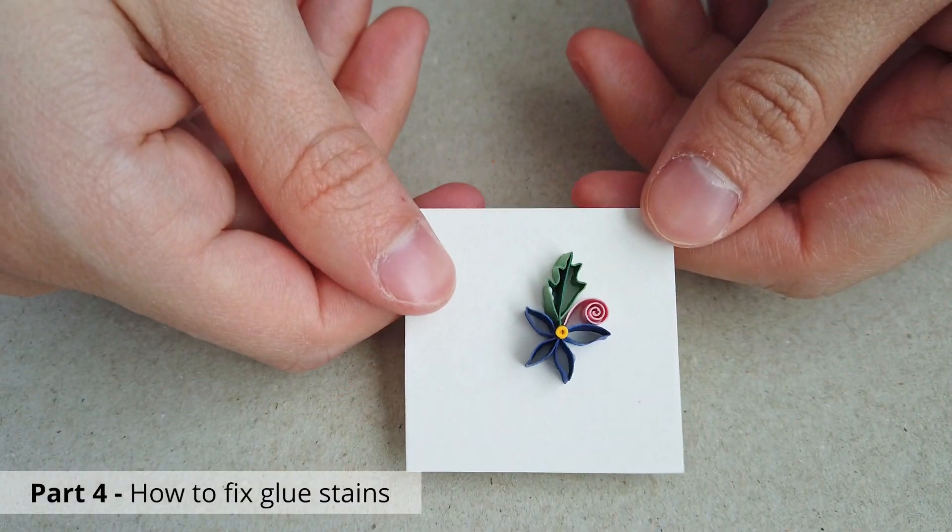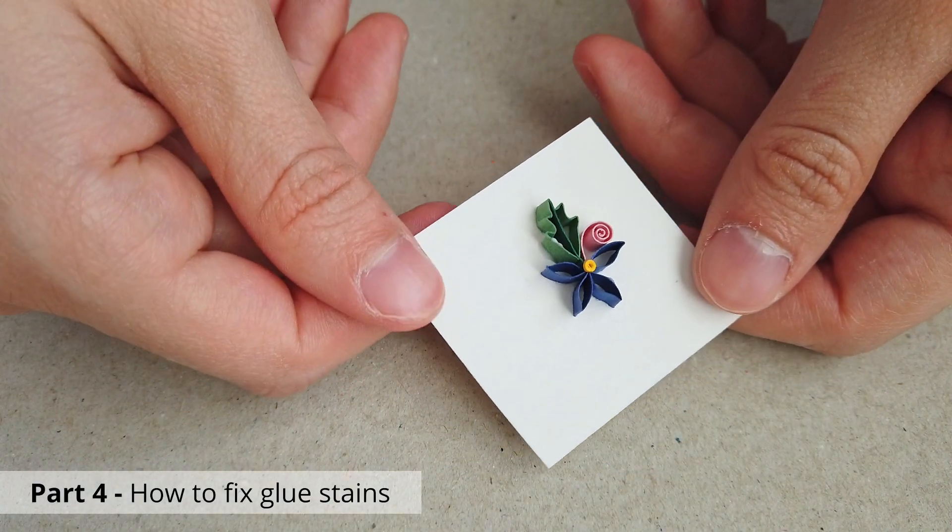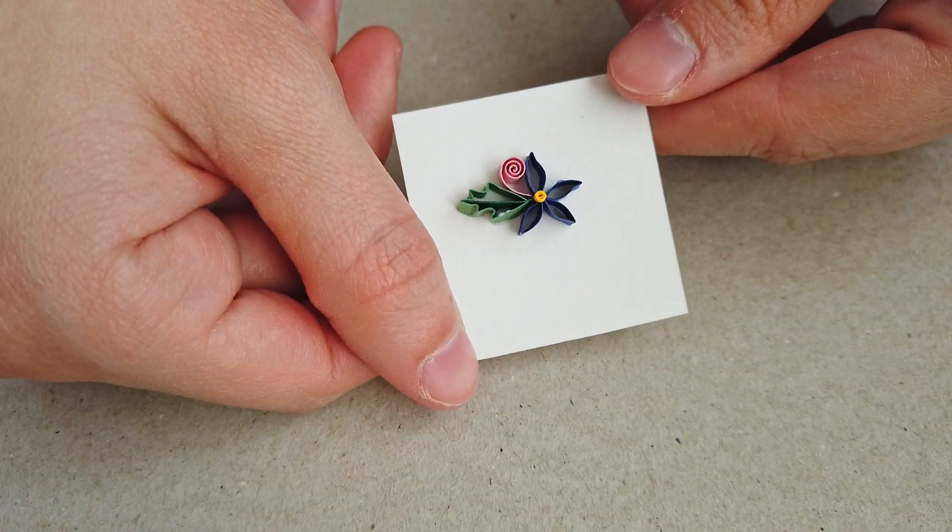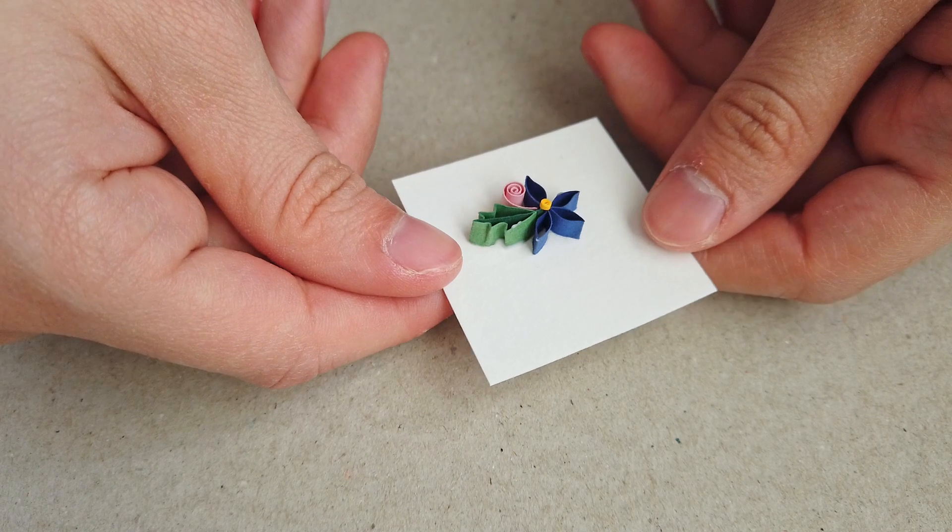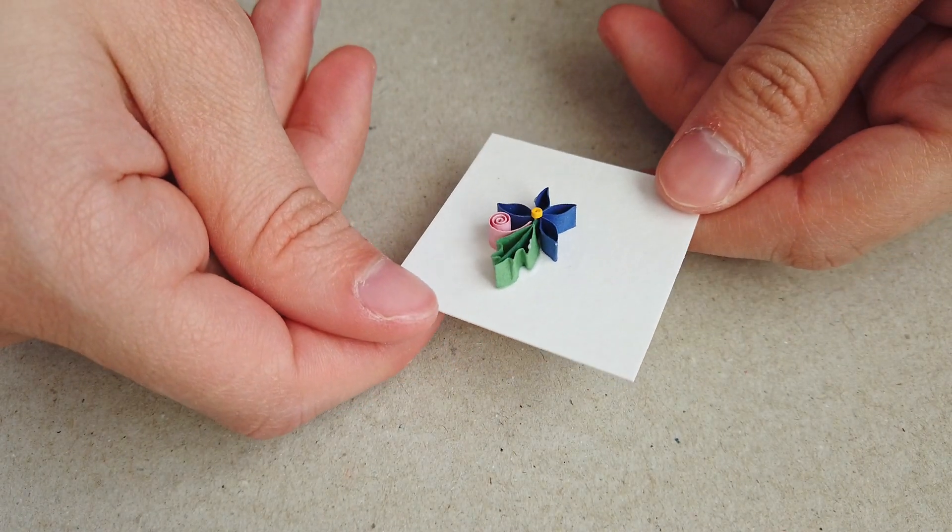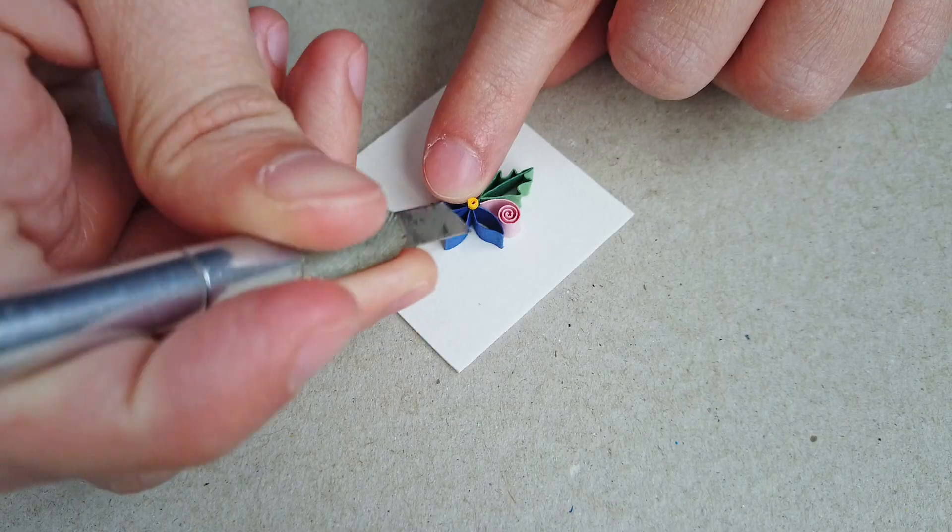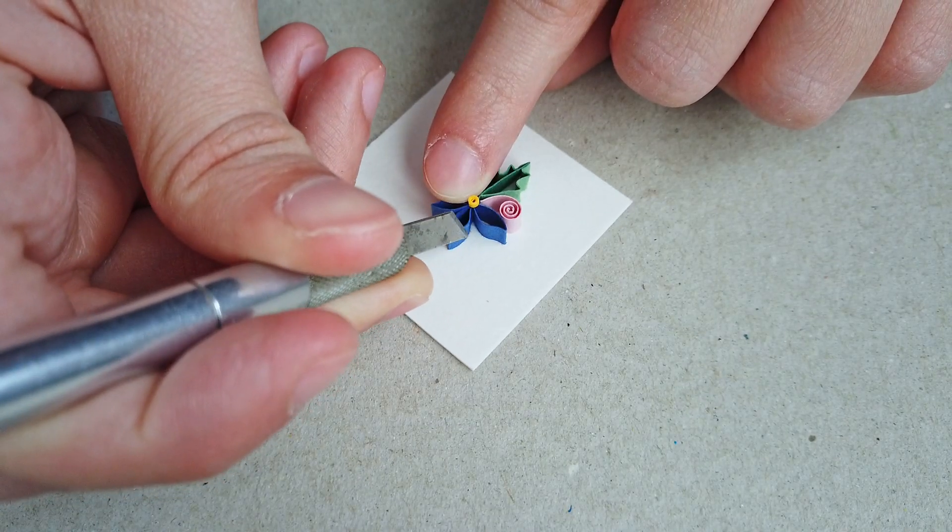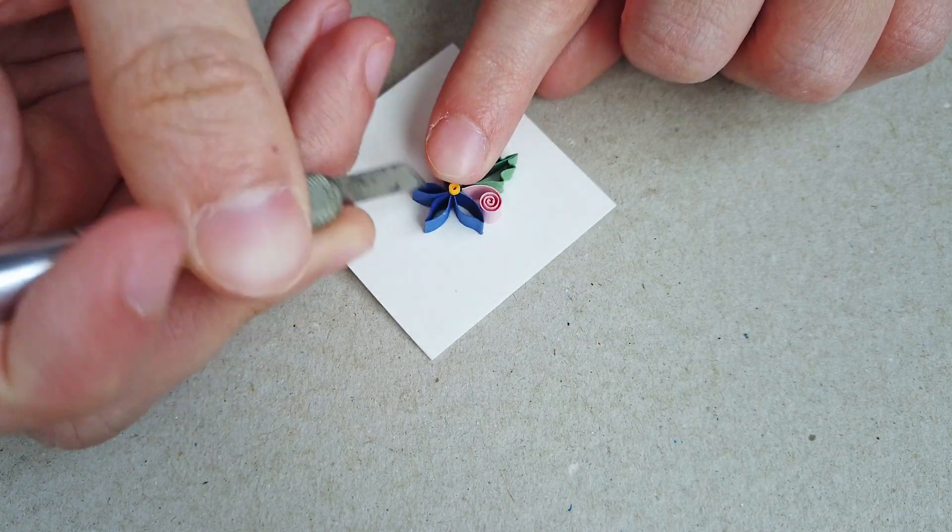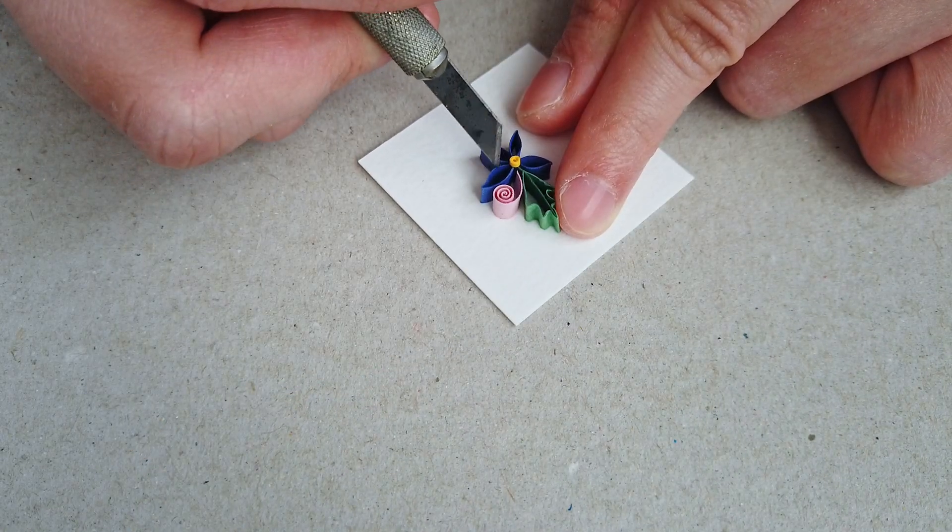Now the way I fix glue stains is that I either remove it quickly when it's still wet or I leave it to dry and remove it afterwards, like you'll see me doing here in my example. So let's say you have a glue stain on top of one of your quilling pieces that you haven't been able to remove right then when the glue was still wet.